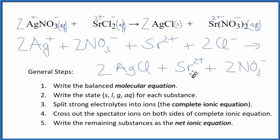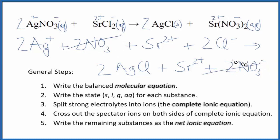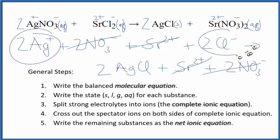So this is the complete or total ionic equation. Now we can cross out spectator ions — they're on both sides of the complete ionic equation; they haven't changed, so we're not really interested in them. I have two nitrate ions in the reactants, two in the products — just cross that out. I have a strontium ion here, strontium ion here — cross it out. But everything else is unique, and that makes this the net ionic equation for AgNO3 plus SrCl2.